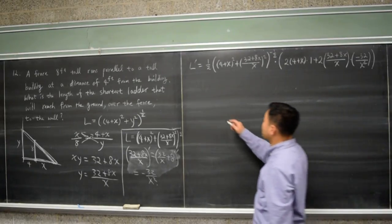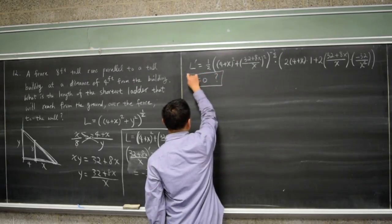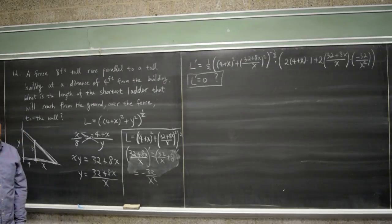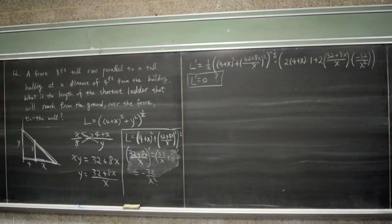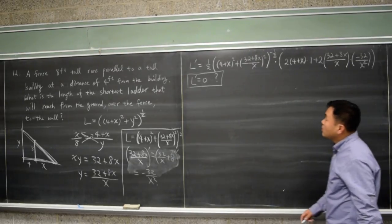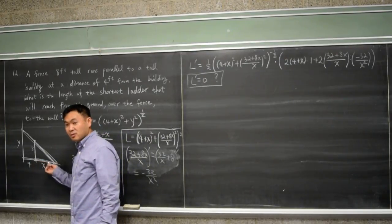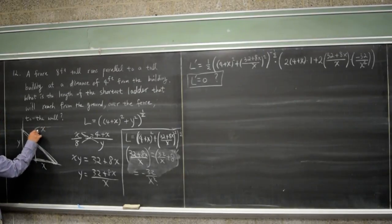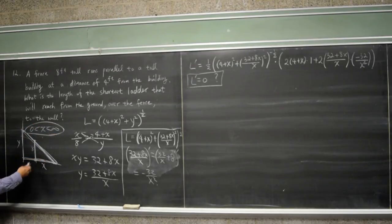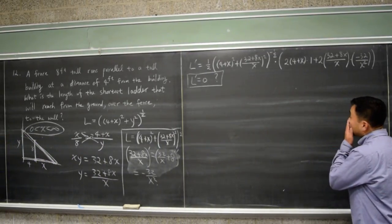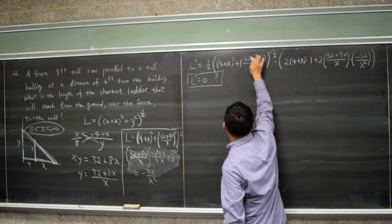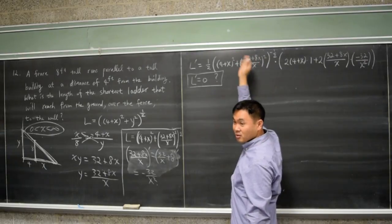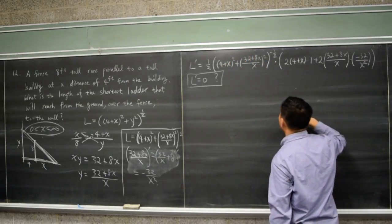Now we have to set this equal to zero and ask: for what value of x does this derivative become zero? Because this is very complicated, we need to argue that some parts can't be zero. Since x is positive — the domain is x > 0 — the outer factor [(4 + x)² + (32 + 8x)/x]^(−1/2) is always positive, so it can never be zero. The only way to get zero is from the inner bracket.